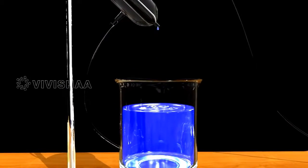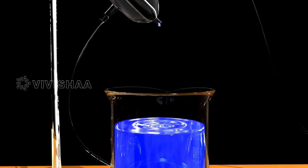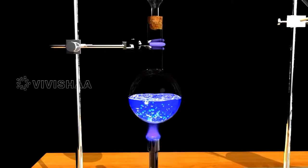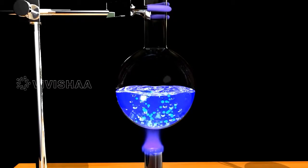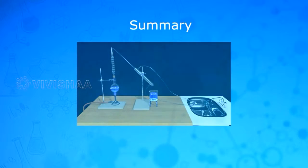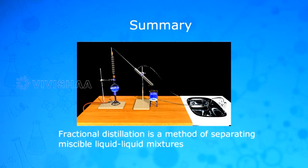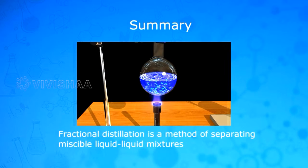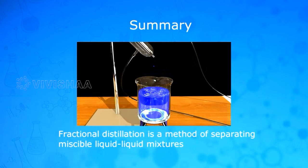Pure ethanol is collected in the collecting vessel and pure water is left behind in the distillation flask. Summary: Fractional distillation is a method of separating miscible liquid-liquid mixtures.